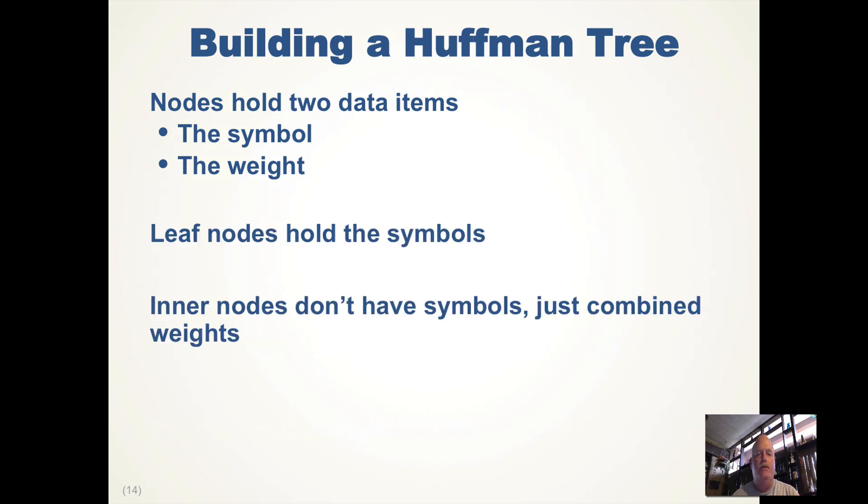Leaf nodes hold the symbols. Inner nodes just have the combined weights of their left and right subtree. We'll use a priority queue to construct the tree because we're going to pull out the lowest frequency symbols or tree first.